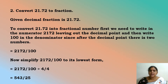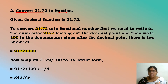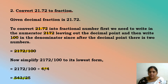One more example: convert 21.72 to a fraction. To convert 21.72 into a fractional number, first write the numerator as 2172, leaving out the decimal point, and then write 100 in the denominator, since after the decimal point there are 2 digits. Now we have 2172/100. We convert this to its lowest form — these two numbers can be divided by 4, so the numerator and denominator are divided by 4, giving 543/25.